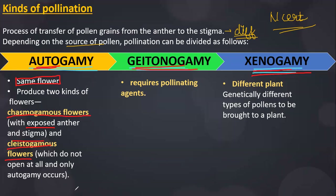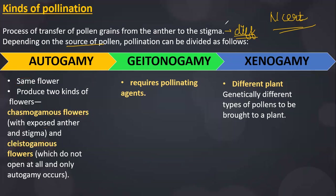Chasmogamous flowers have exposed anther and stigma. Cleistogamous flowers do not open at all, and only autogamy occurs in them — no other type of pollination is possible. The advantage of cleistogamous flowers is that there is no need for pollinating agents; even in the absence of pollinating agents, seed setting is assured. This is a very important MCQ.